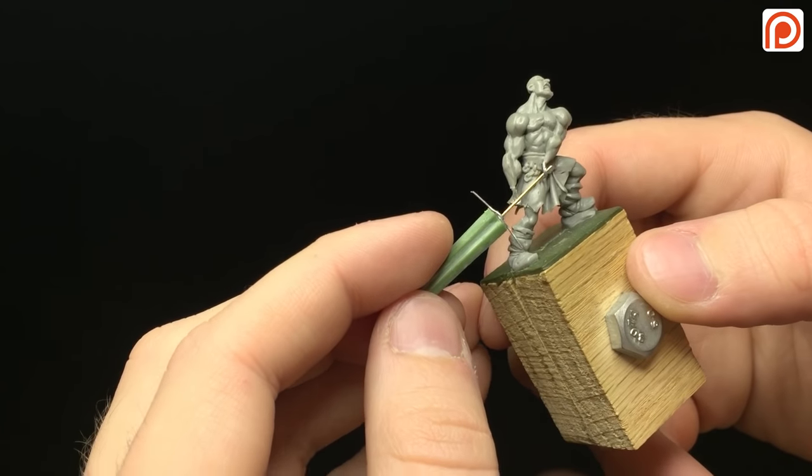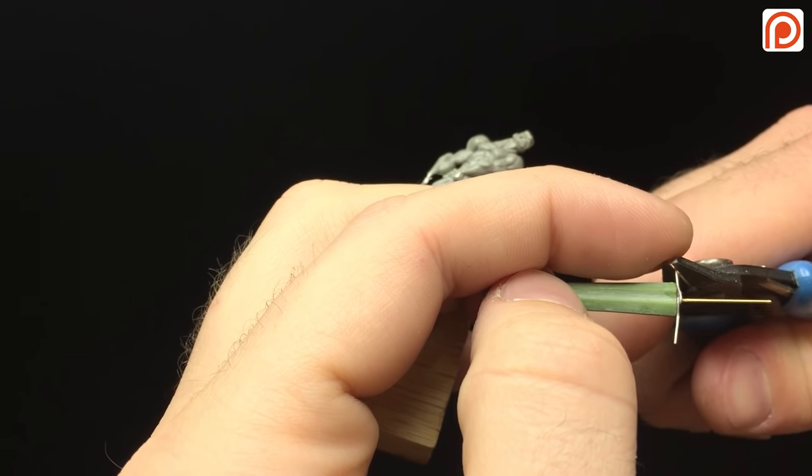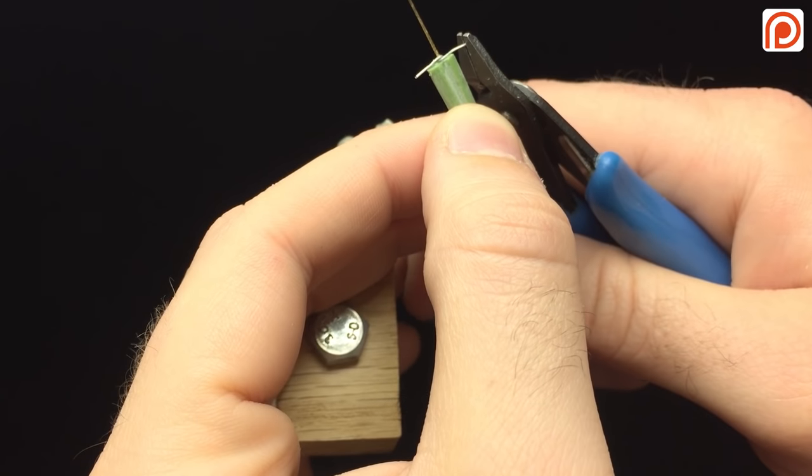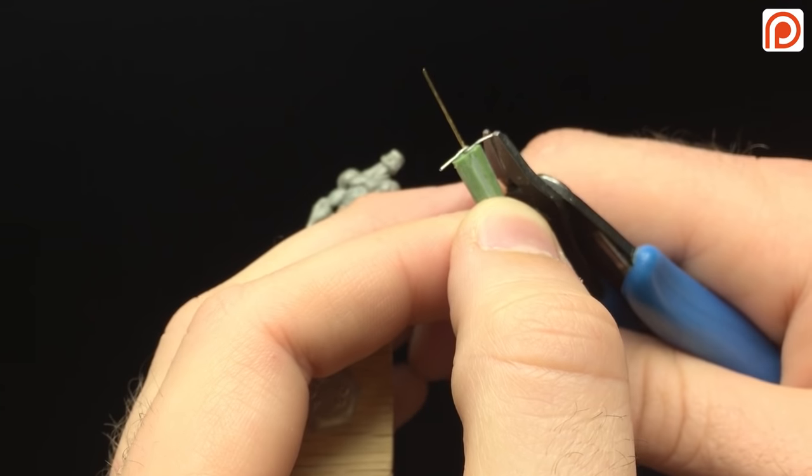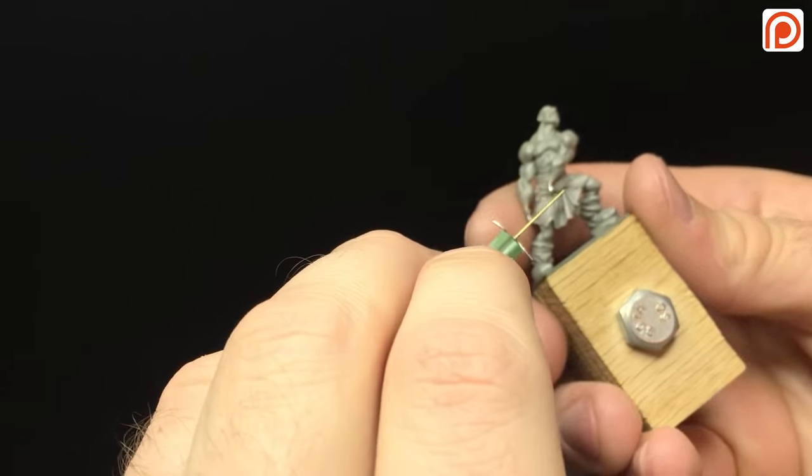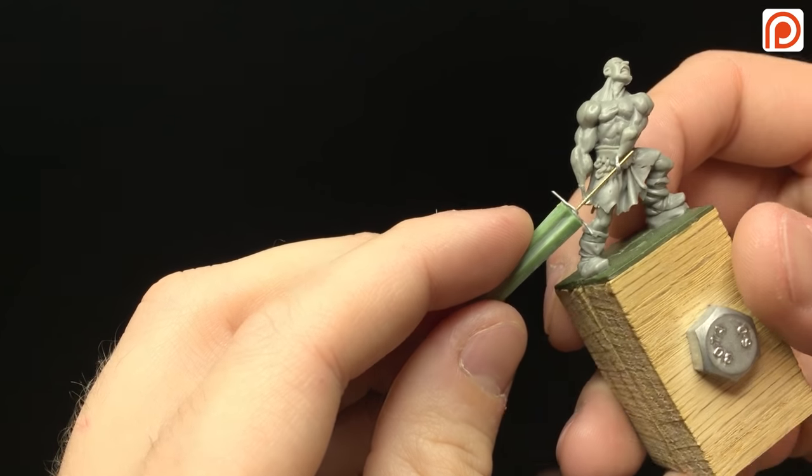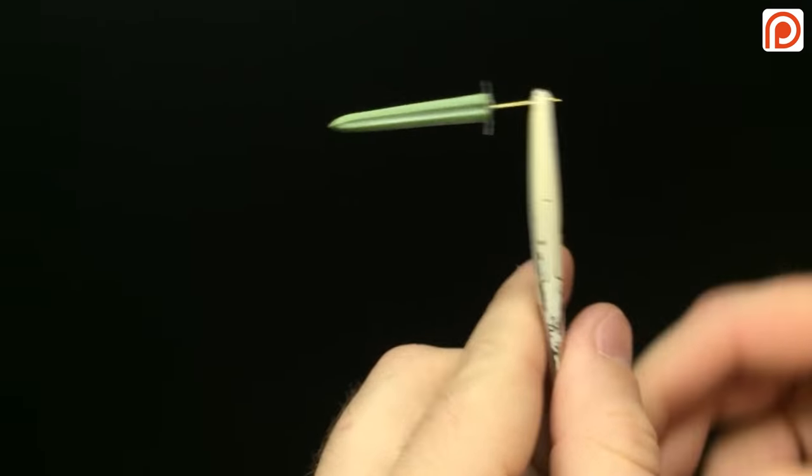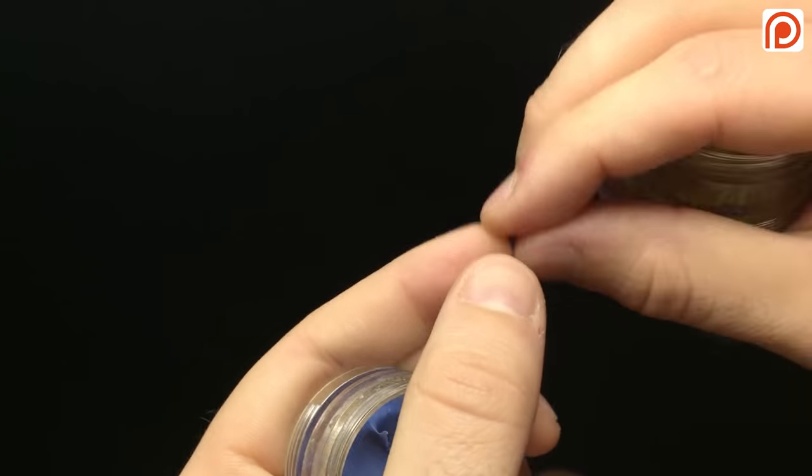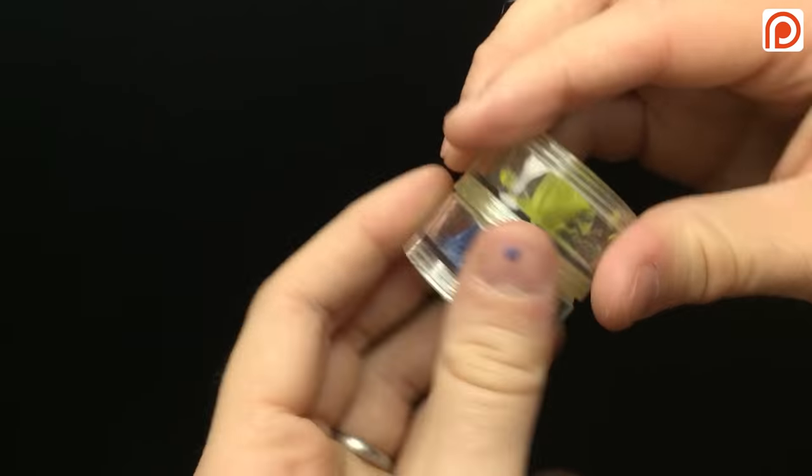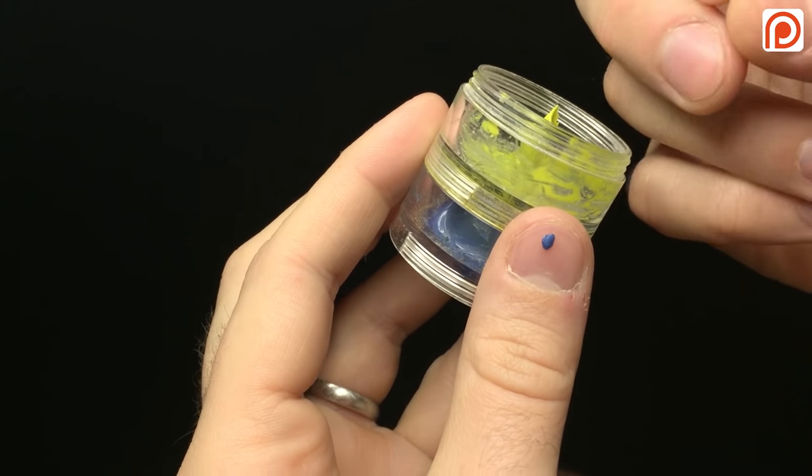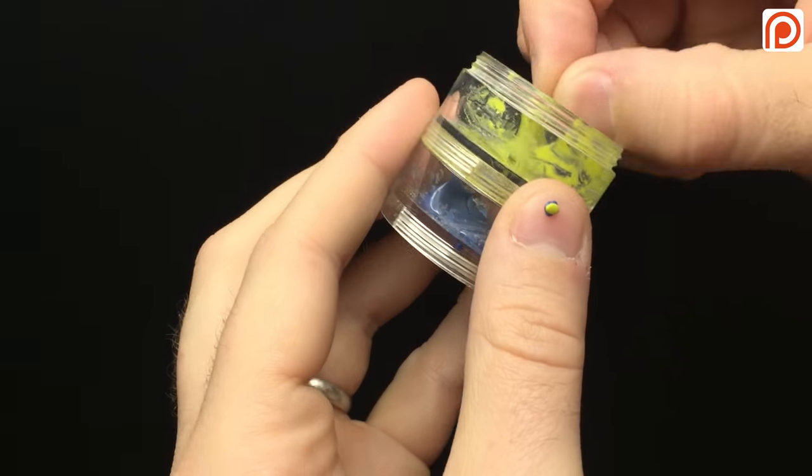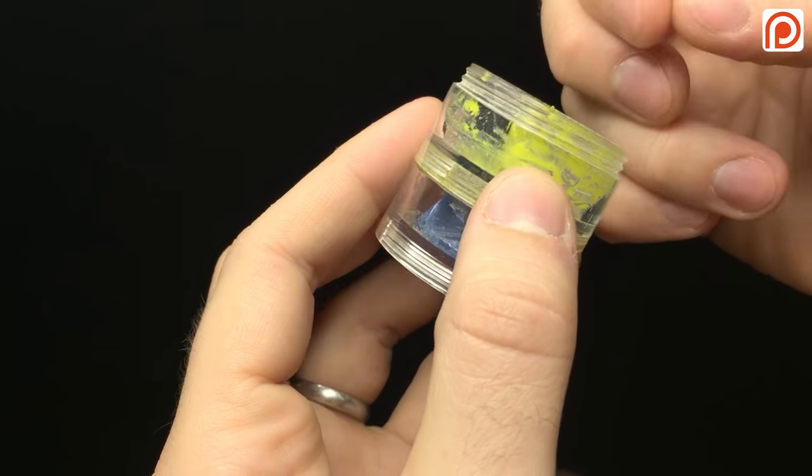I almost never sculpt my miniatures in a vacuum, so don't be afraid to size up your sword and the elements of it next to the miniature it's going to go with. I realized that the armature was way too long for what I wanted in the cross guard, so just go ahead and trim it off. What you saw there was a hemostat, a great tool for holding onto weapons as you're sculpting.